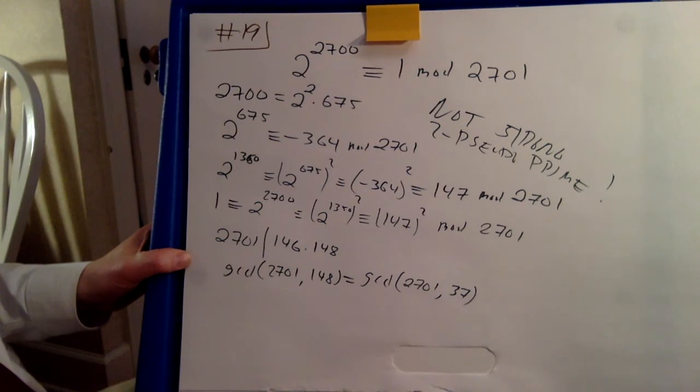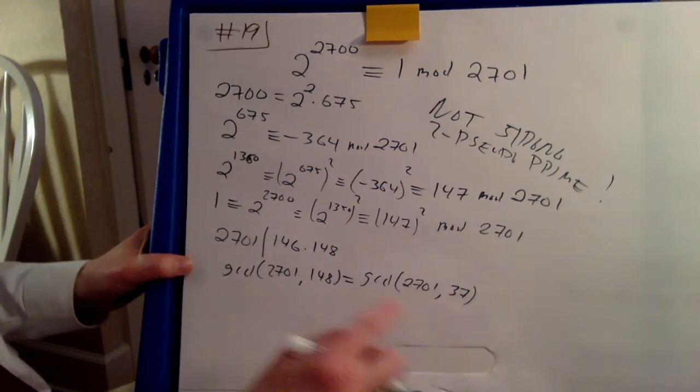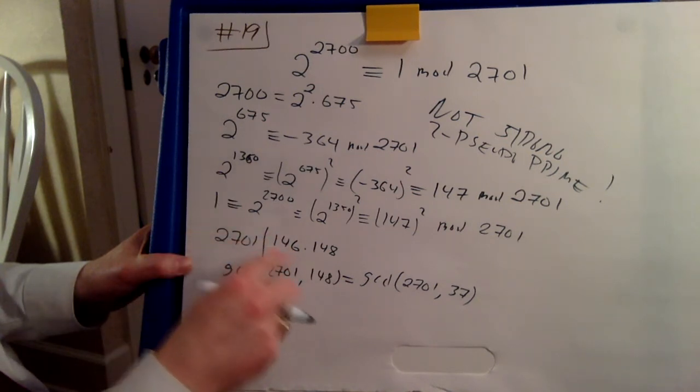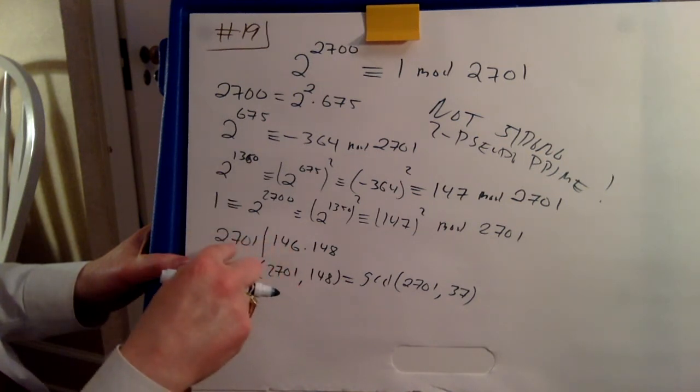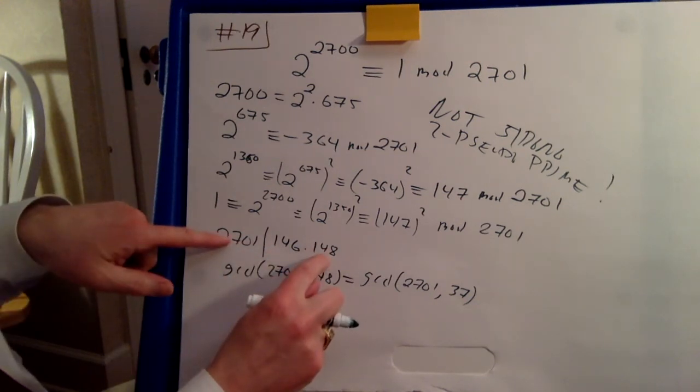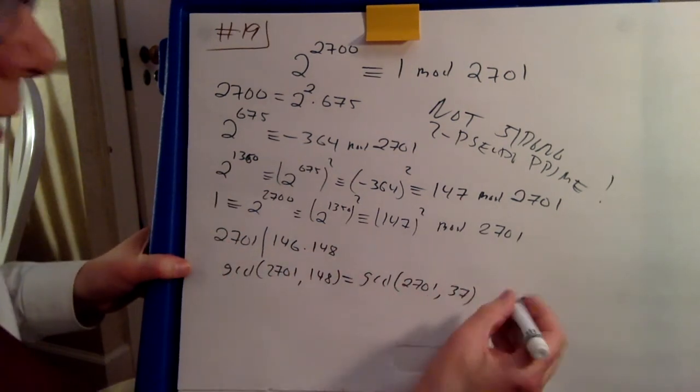And now you know that 37 is prime. And all of this number cannot divide into 146. Hence, you know that 2071 has to have a common factor here. And that common factor is 37.